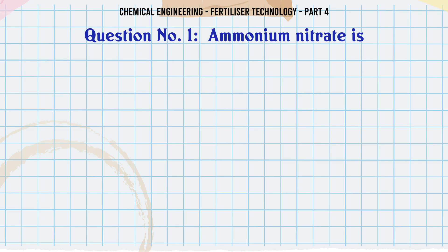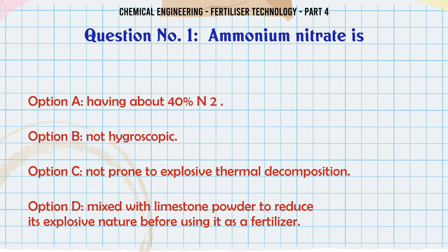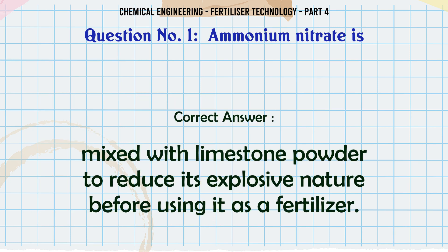Ammonium nitrate is: a. having about 40% N2, b. not hygroscopic, c. not prone to explosive thermal decomposition, d. mixed with limestone powder to reduce its explosive nature before using it as a fertilizer. The correct answer is: mixed with limestone powder to reduce its explosive nature before using it as a fertilizer.